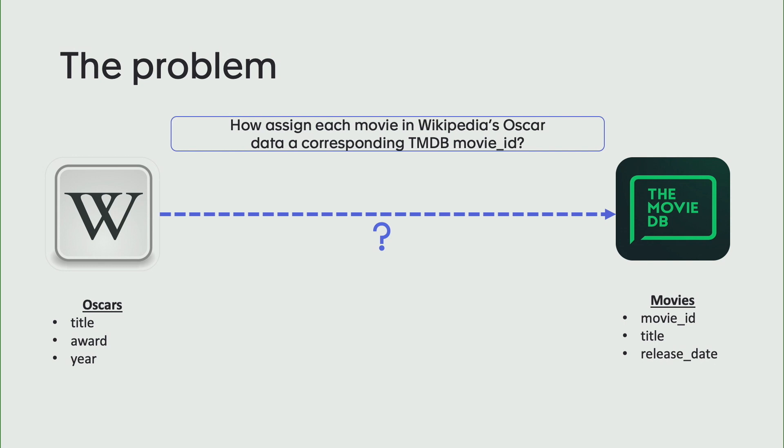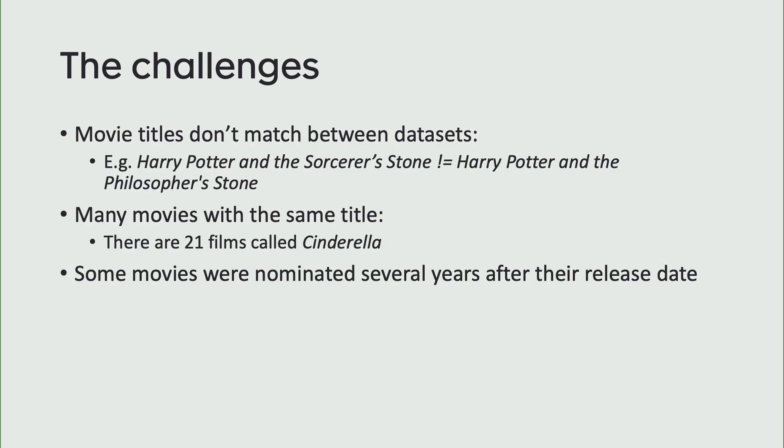The Movie Database is basically an open platform that allows users to go and vote on different movies and add different data for different movies, and everyone knows Wikipedia. If we wanted to use these two together in any relational format, we'd need to assign every row in the Wikipedia dataset a movie ID from the Movie Database. The main challenge is matching on movie titles. For example, I'm American, so the movie is The Sorcerer's Stone, but you guys would call it The Philosopher's Stone, which means those two movies don't match up in the datasets — and most programs wouldn't see those two words as similar.